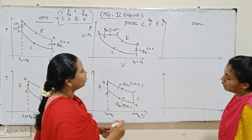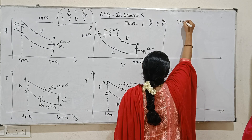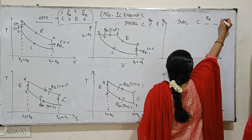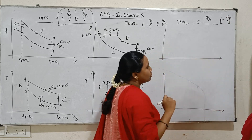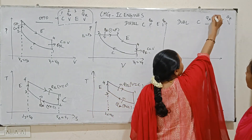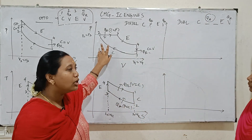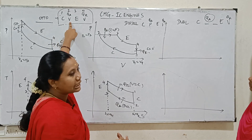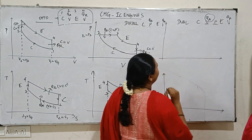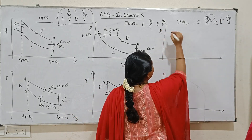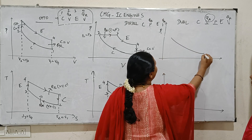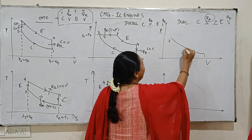Next is the Dual cycle. The Dual cycle has compression, heat addition, expansion, and heat rejection. Heat rejection is at constant volume. The Dual cycle combines the Otto cycle and Diesel cycle — the Otto cycle has heat addition at constant volume, the Diesel cycle at constant pressure.